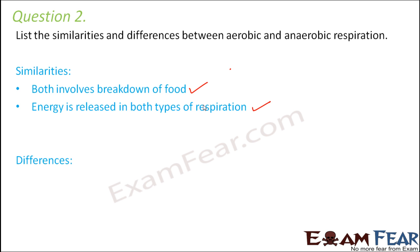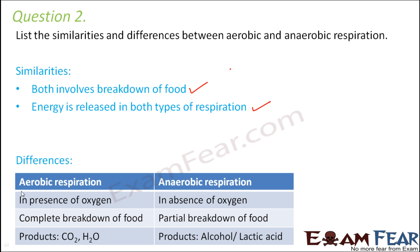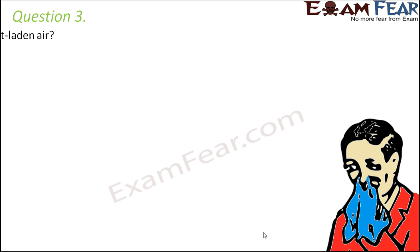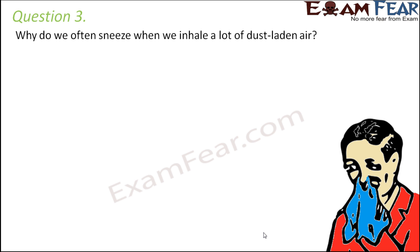For differences: aerobic respiration happens in the presence of oxygen, while anaerobic respiration doesn't need oxygen. In aerobic respiration there is complete breakdown of food, so the products are carbon dioxide and water along with energy. In anaerobic respiration there is partial breakdown of food, so glucose gets converted to intermediate substances like alcohol or lactic acid.